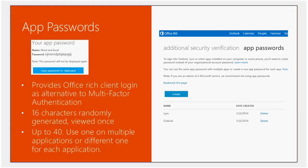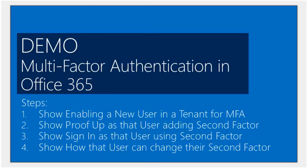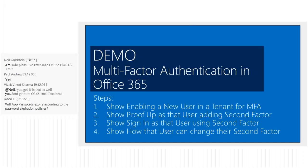Let's take a look at this in Office 365. I'm going to walk through: first, the admin enabling a user for multi-factor authentication; then what we call 'proof up,' which is the first time a user signs into Office 365 and is prompted to add their second factor; then signing in with the second factor; and finally the end-user UX where you can change that second factor.